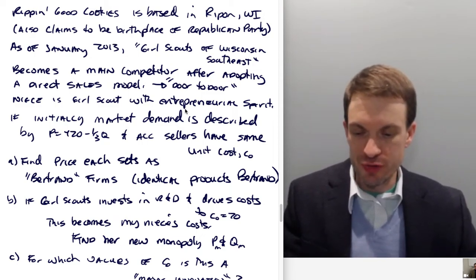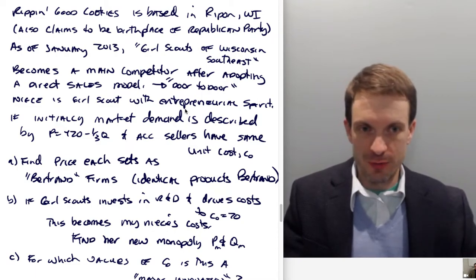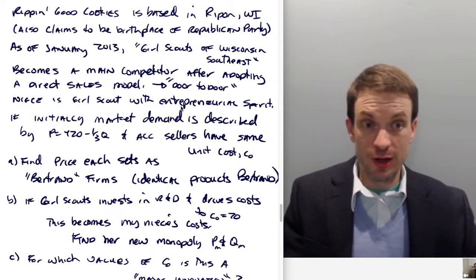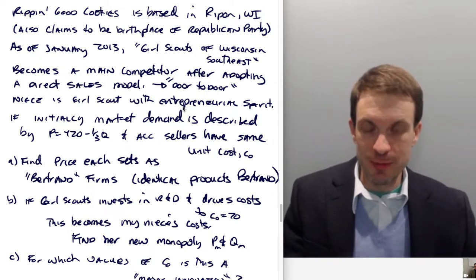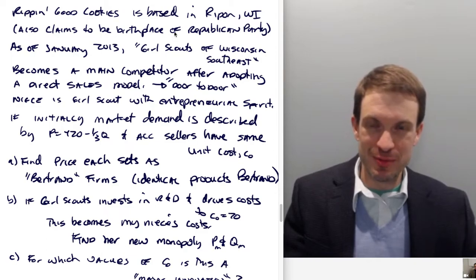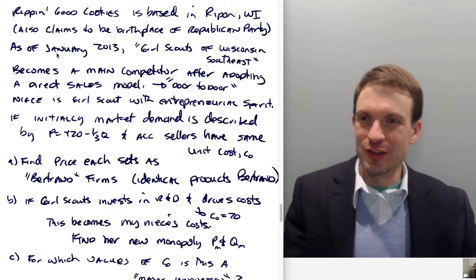We'll determine if we get a large or small innovation, going from a competitive market to monopoly power. Will the monopoly be able to price as a single price monopolist? Rippin' Good Cookies is based in Rippin', Wisconsin, which also claims to be the birthplace of the Republican Party. When you drive into Rippin', Wisconsin, you see these two things on their sign.